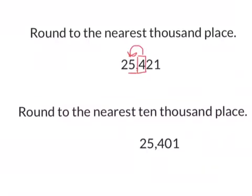So since it's a 4 or less, we're going to let the 5 rest. This stays the same. All the digits to the right will turn to a zero, and all the digits to the left will remain the same. So 25,421 rounded to the nearest thousand place would be 25,000.